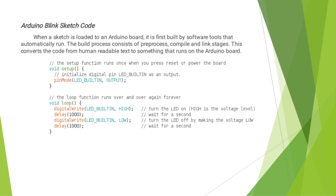When the sketch is loaded to an Arduino board, it is first built by software tools that automatically run. The build process consists of pre-processing, compile, and link stages. This converts the code from human readable text to something that runs on the Arduino board.